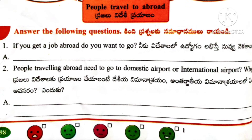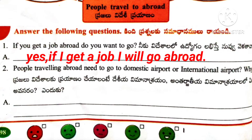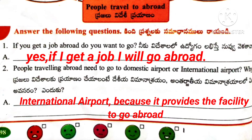Answer the following questions. First question: If you get a job abroad, do you want to go? Answer: Yes. If I get a job, I will go abroad. Question number two: People traveling abroad need to go to a domestic airport or international airport. Why? Answer: International airport, because it provides the facility to go abroad.